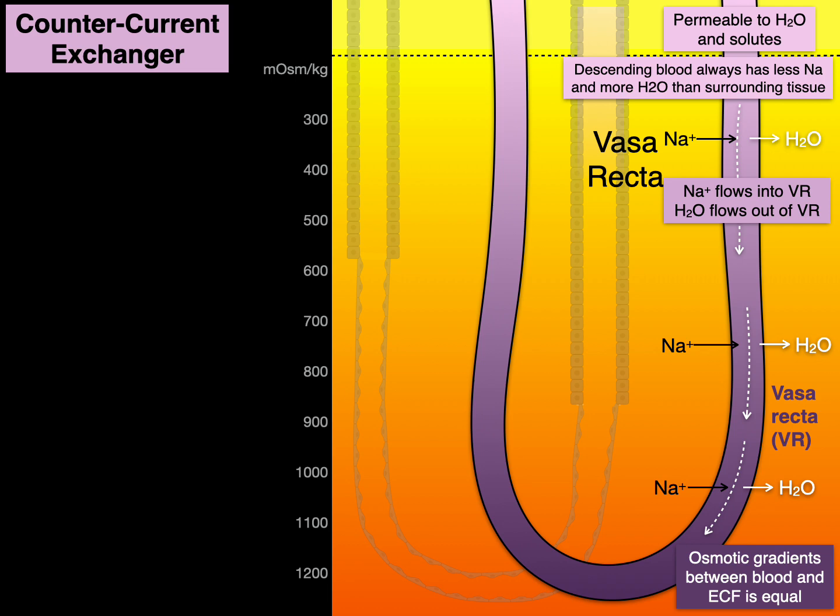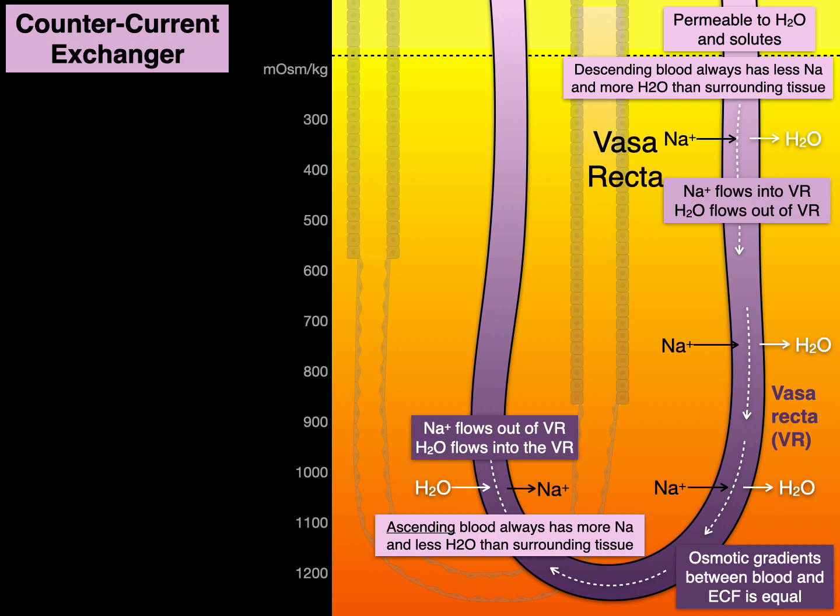Dark purple, dark orange, 1200 milliosmoles per kilogram. And you see that hairpin turn of the vasa recta. So now ascending blood always has more sodium and less water than the surrounding tissue as it's going up. And as a result, notice what happens. Sodium flows out of the vasa recta until it's equalized and water flows into.